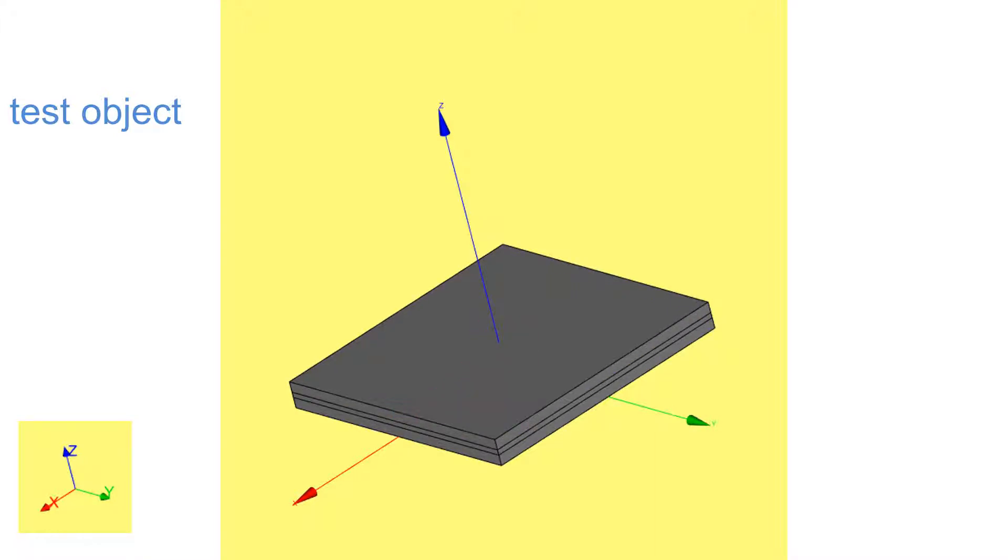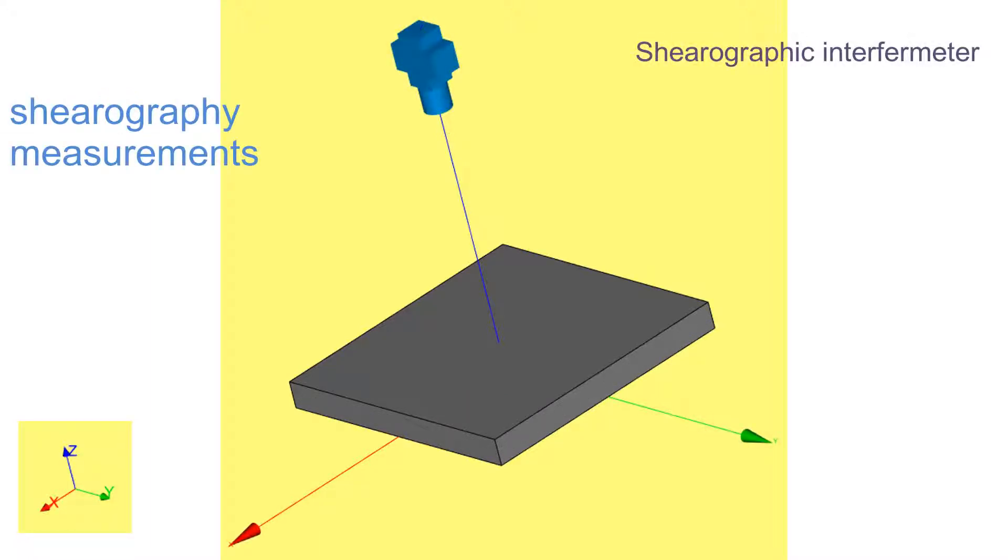Now, we simulate a shearographic measurement of the sample's surface deformation. First, we install the shearography measuring head.